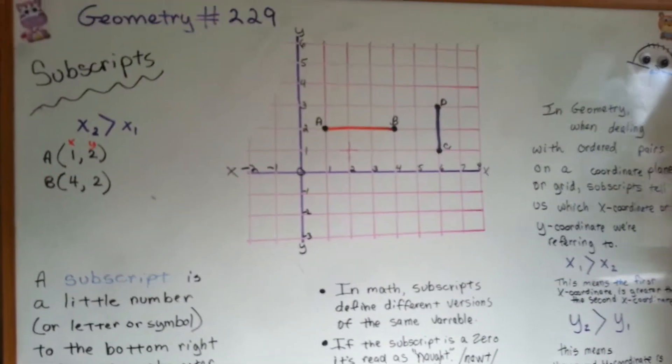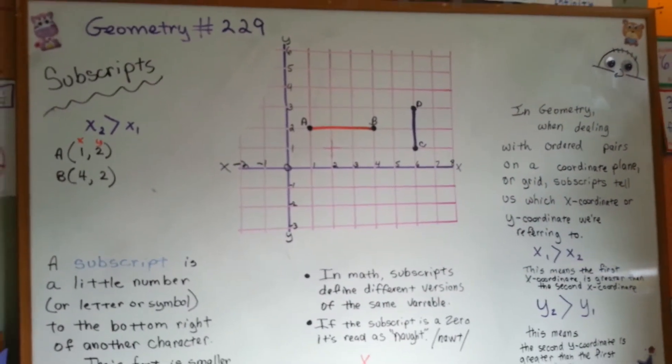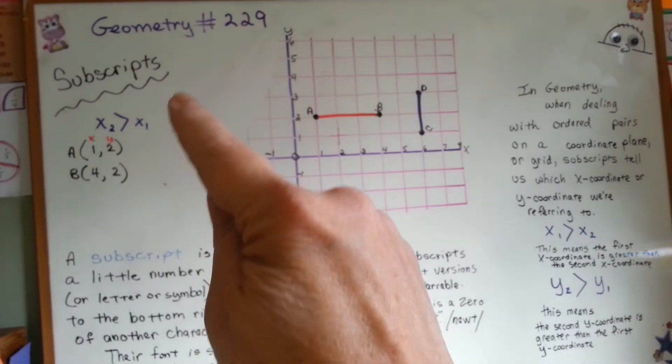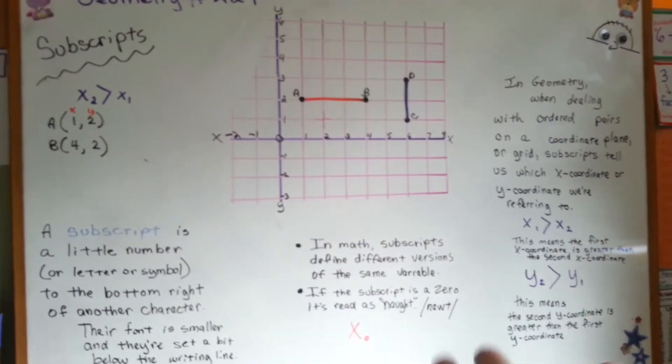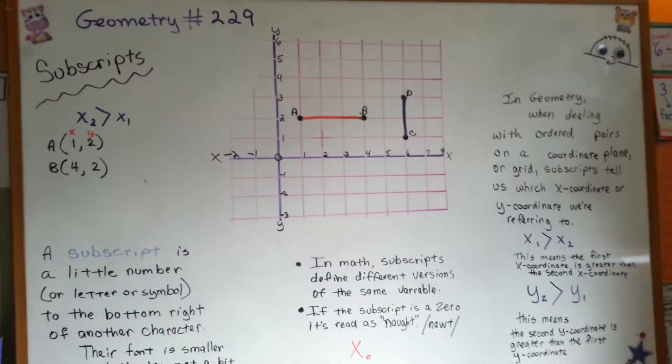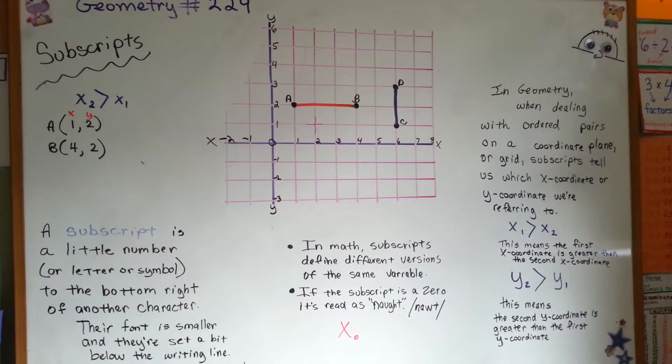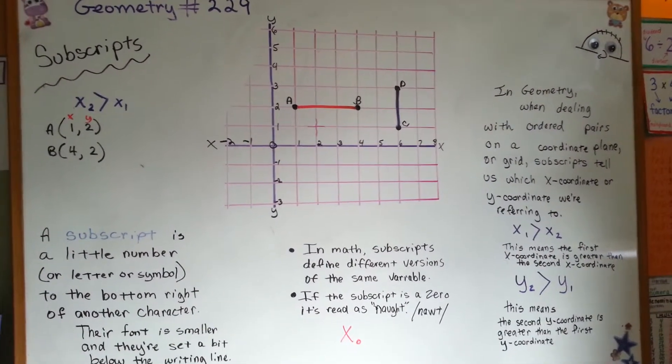So, there's also things called superscripts. That's when the number is up above, like to the tenth power, stuff like that. But we're dealing with the grid right now, so let's just stick to this. I'll see you next video. Bye!